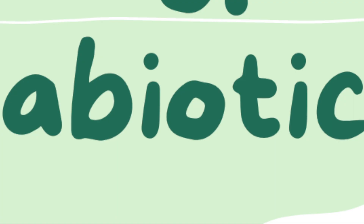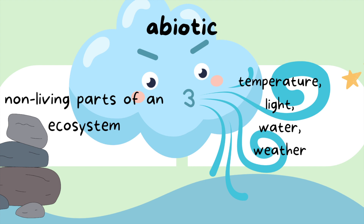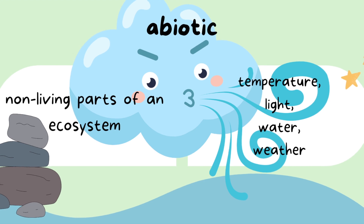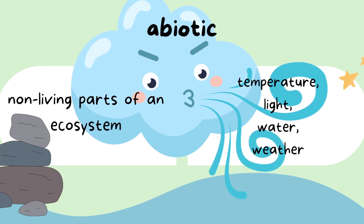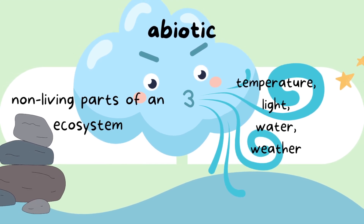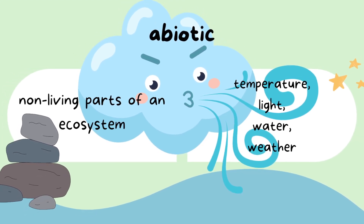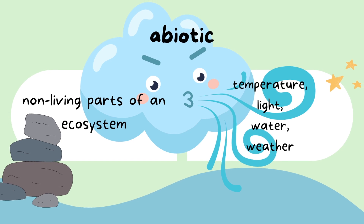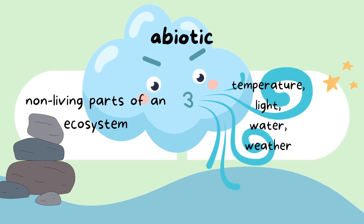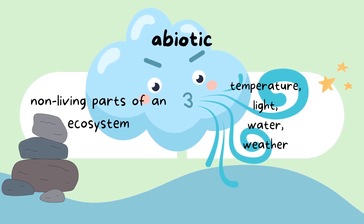But not only did I find a bunch of biotic factors when I was walking around my yard, I found a lot of abiotic factors too. Abiotic factors are the non-living parts of an ecosystem. They include things like temperature, weather, light, and water. Let's see what I found.